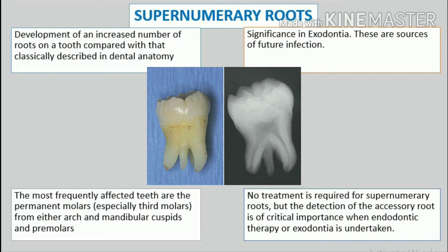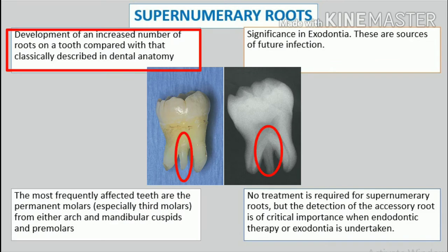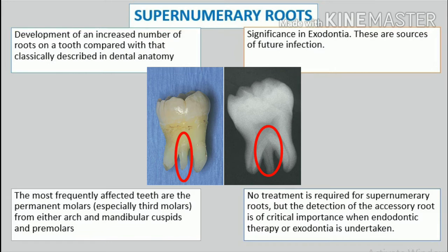Supernumerary Roots. The term supernumerary roots refers to the development of an increased number of roots on a tooth compared with that classically described in dental anatomy. Teeth that are normally single-rooted, particularly the mandibular bicuspids and cuspids, often have two roots. Both maxillary and mandibular molars, particularly third molars, may also exhibit one or more supernumerary roots.